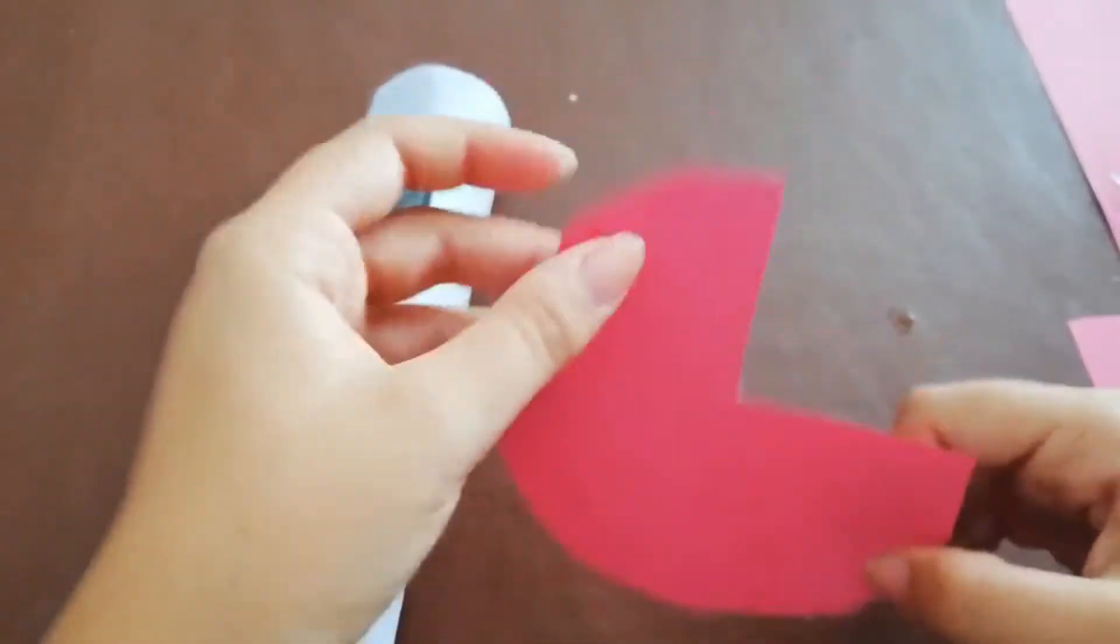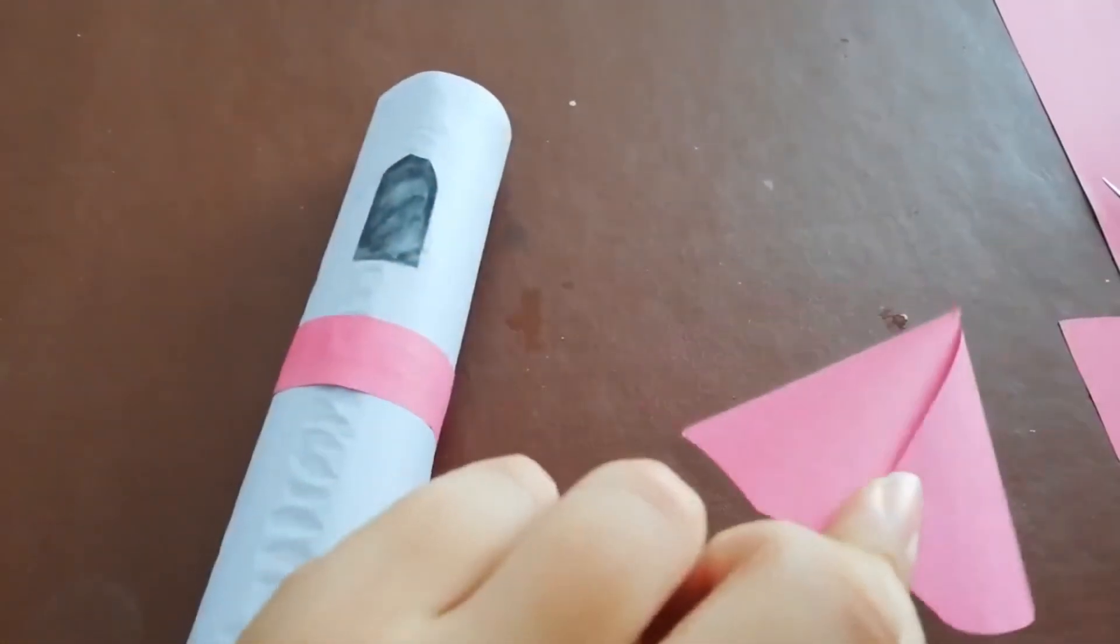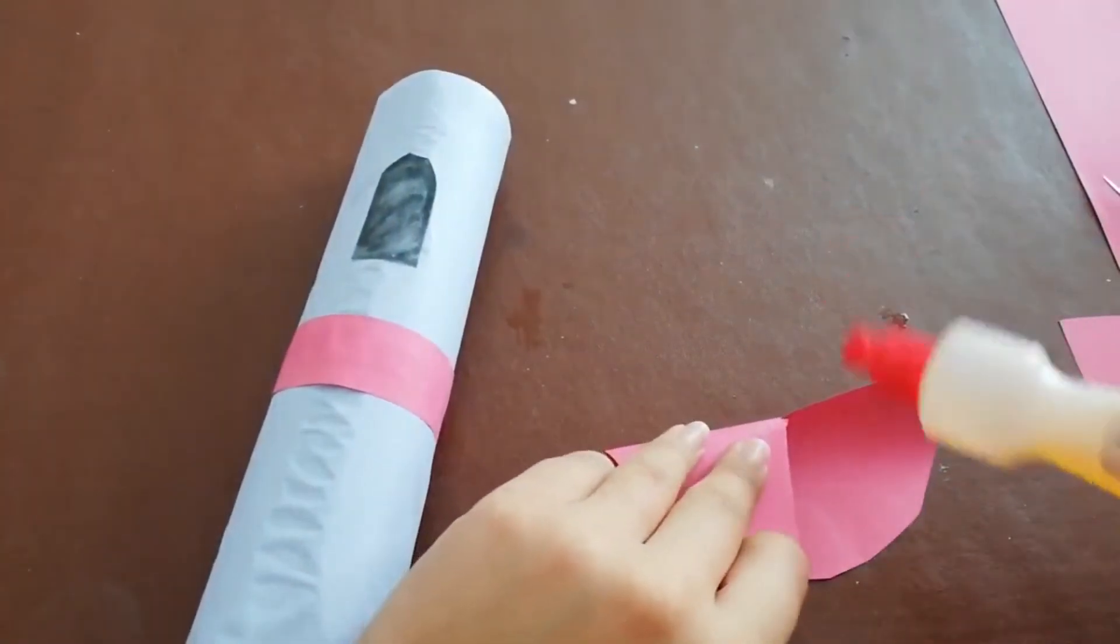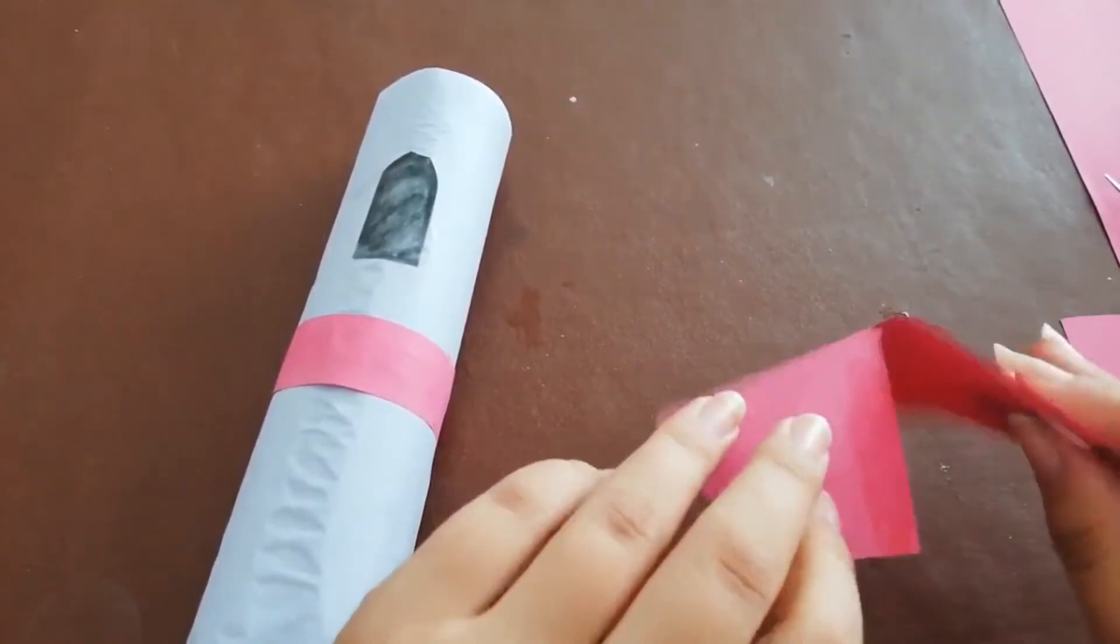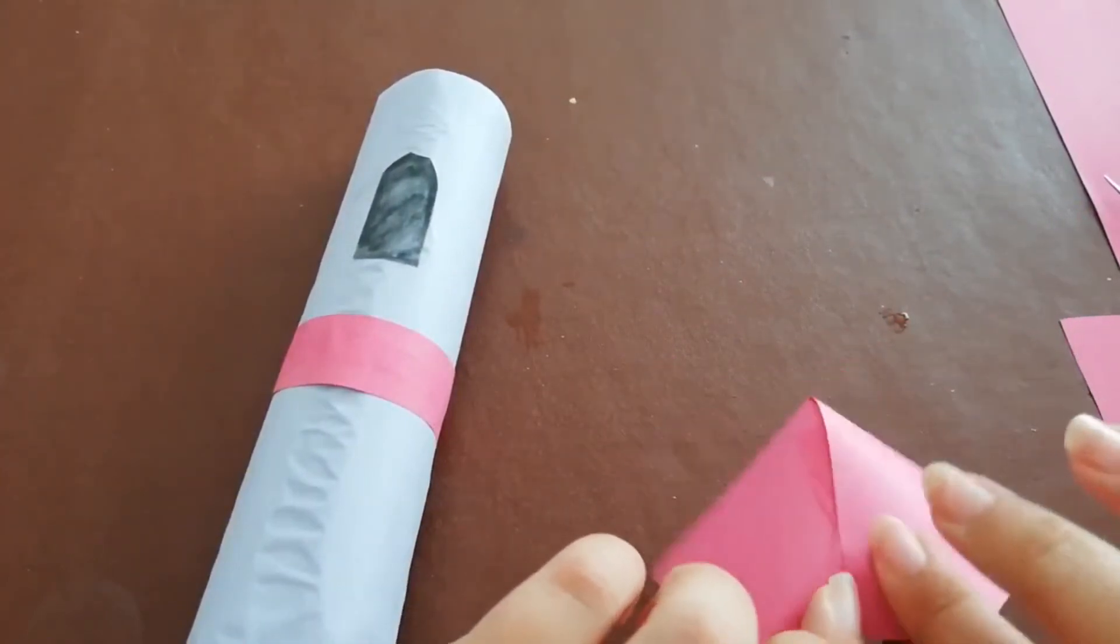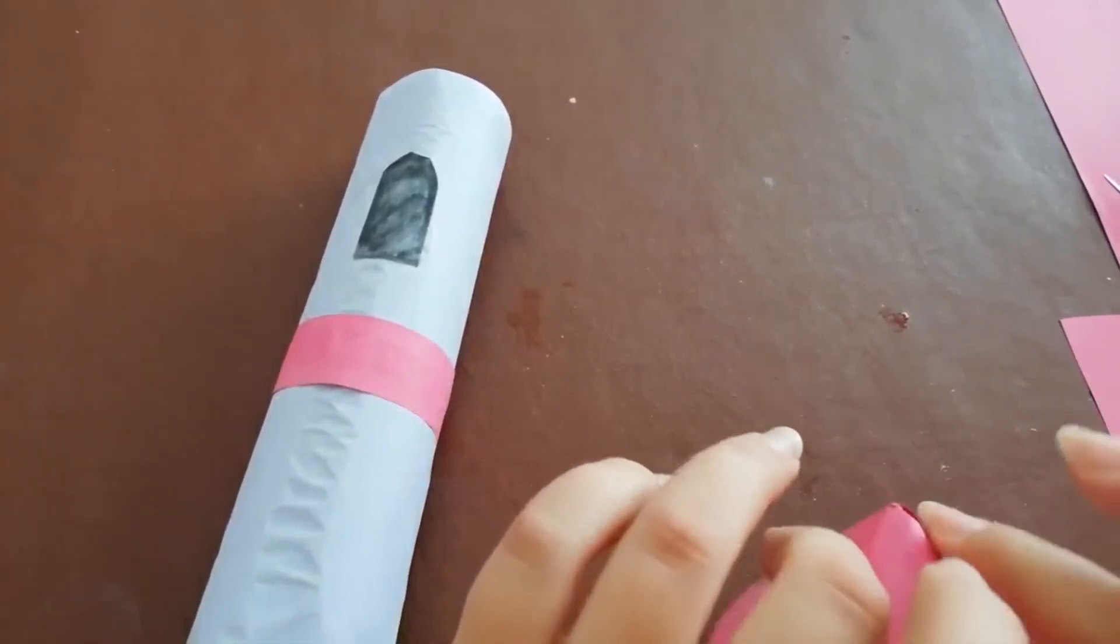And we're going to be gluing these two sides together to make a cone. So, to do that, I'm going to put a little bit of glue along here. And glue them together. And just push it down so it stays nice and tight.